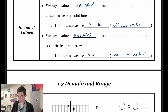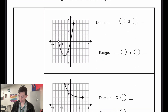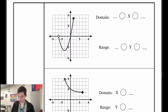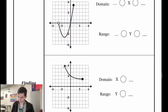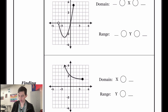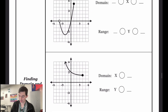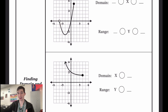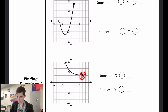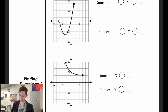Let's go to the next page and try some examples. There are usually just two different types of domain and range questions you may see: we could either have two endpoints where the graph is not continuing forever in one direction, or we could have just one endpoint where the graph is continuing in a certain direction.